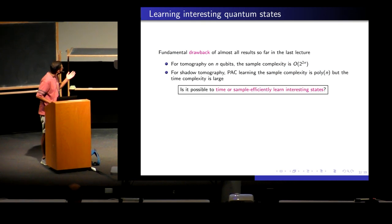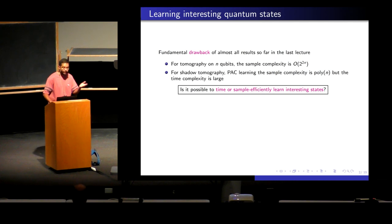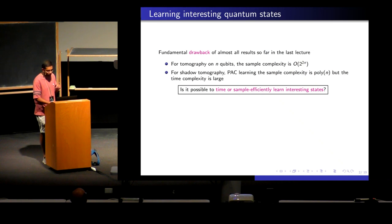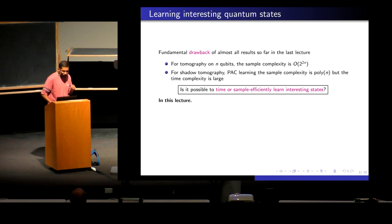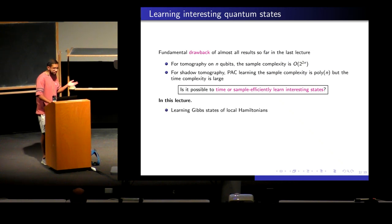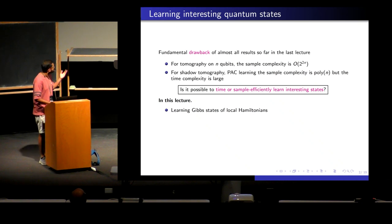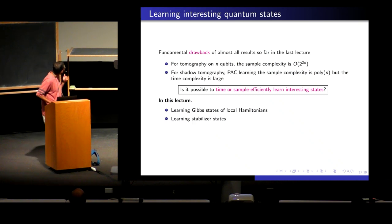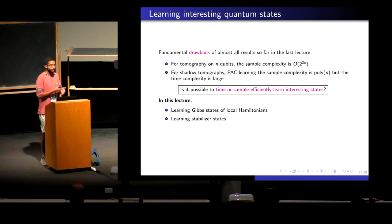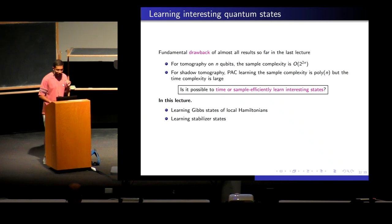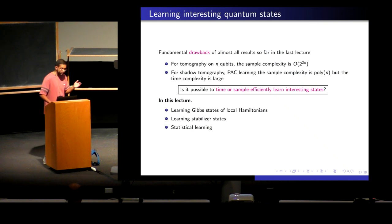This naturally motivates the question: is there a way to efficiently learn quantum states, or are there interesting classes of quantum states that one can learn? In this talk, I'll give a few examples of quantum states that are learnable time-efficiently or sample-efficiently. The first is Gibbs states of local Hamiltonians, then stabilizer states — output states of Clifford circuits — and finally some recent work on statistical learning.